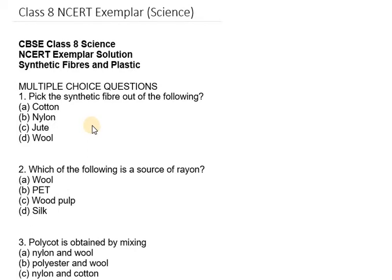It says pick the synthetic fiber out of the following. So we know that cotton is natural, jute is natural, wool is natural. So the leftover is nylon. Nylon we know is obtained from chemical substances, so the right option is nylon, that is synthetic fiber.